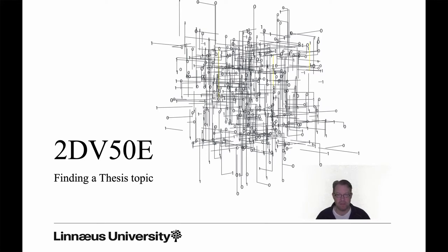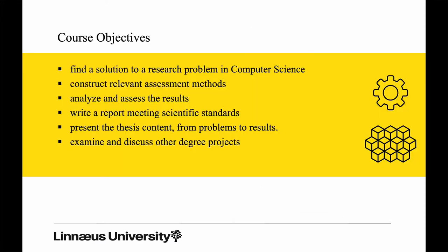Some of you already have a topic that's developed and processed, some even together with a supervisor. But if you look at the course objectives — find a solution to a research problem in computer science — this puts a rather high standard on the topic you select. It's important that you find a project where you actually meet the course objectives.